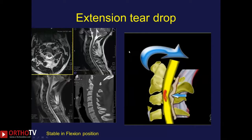Another fracture seen in the upper cervical spine is the extension teardrop fracture, generally seen in the upper cervical spine. There is an avulsion fracture of the anterior end of the vertebra; the annulus tears the anterior inferior part of the fracture. It is stable in flexion and there is no retropulsion seen in this case.